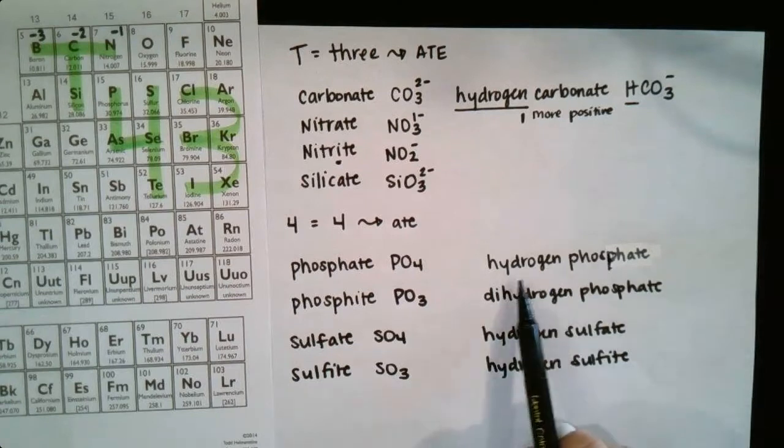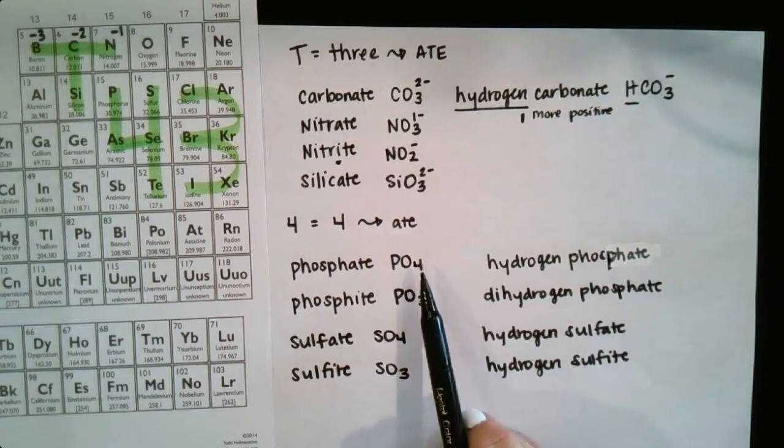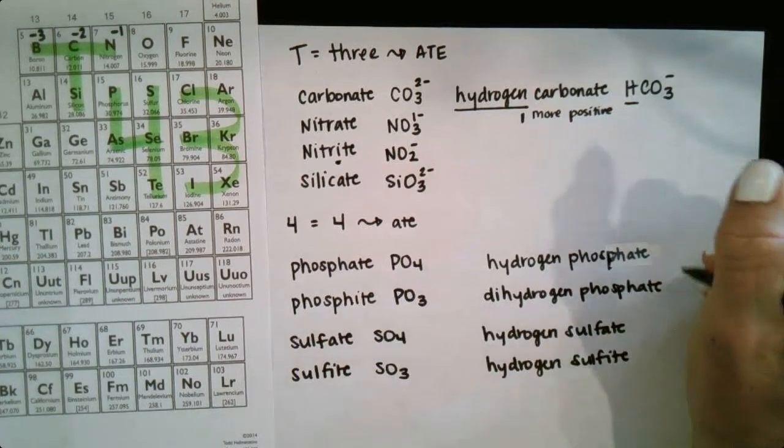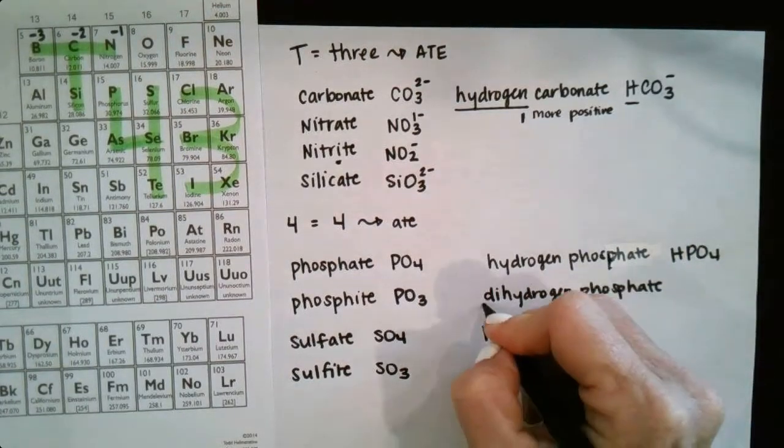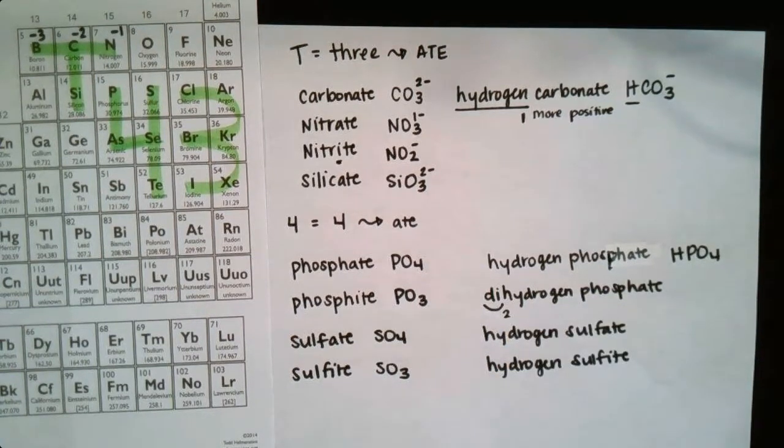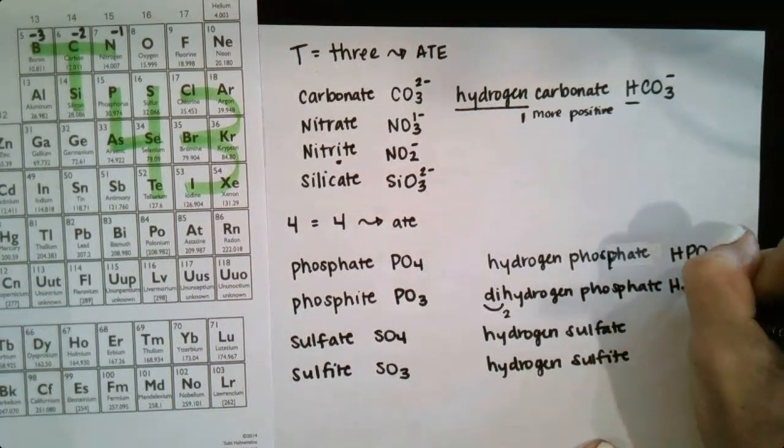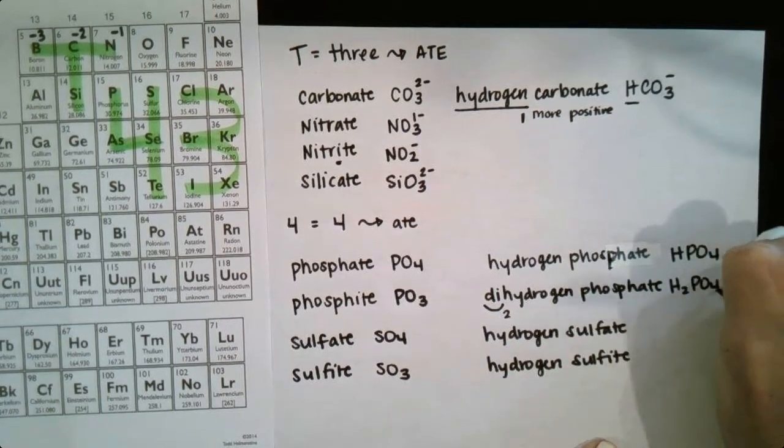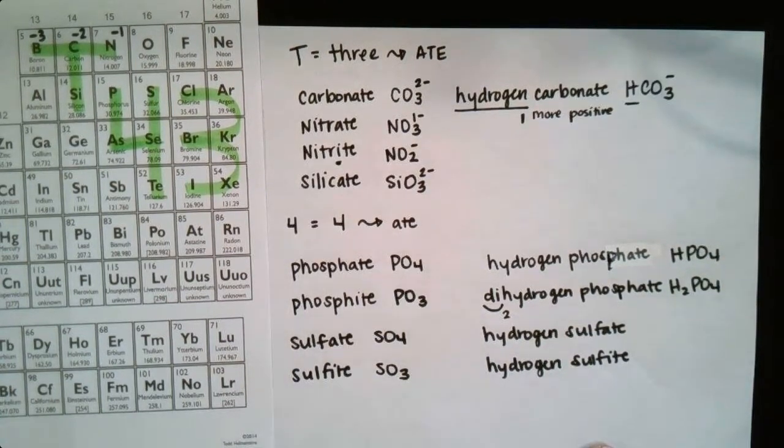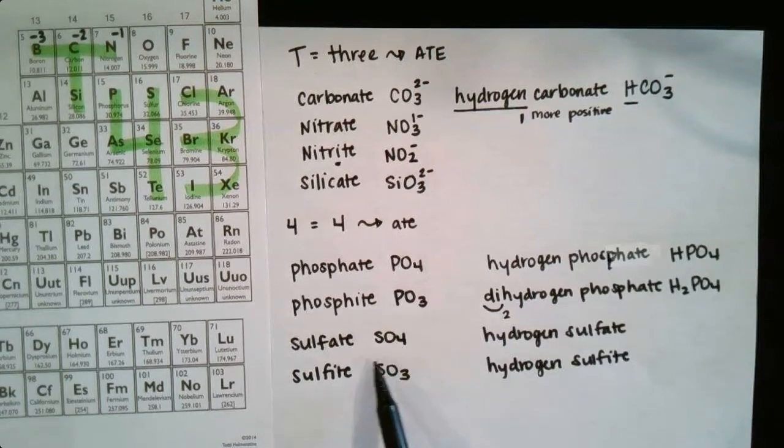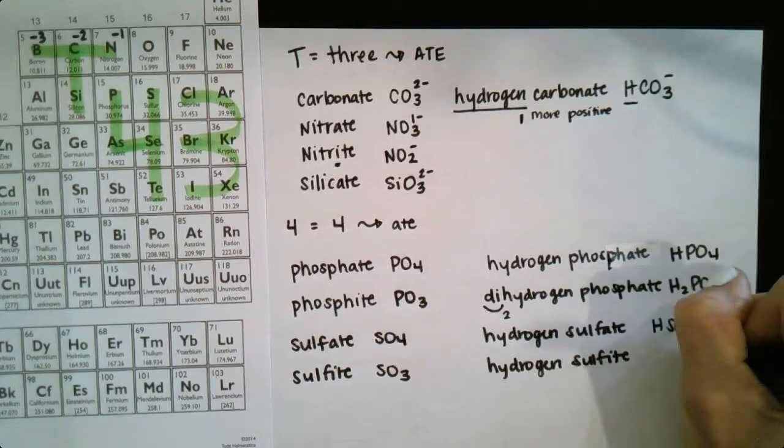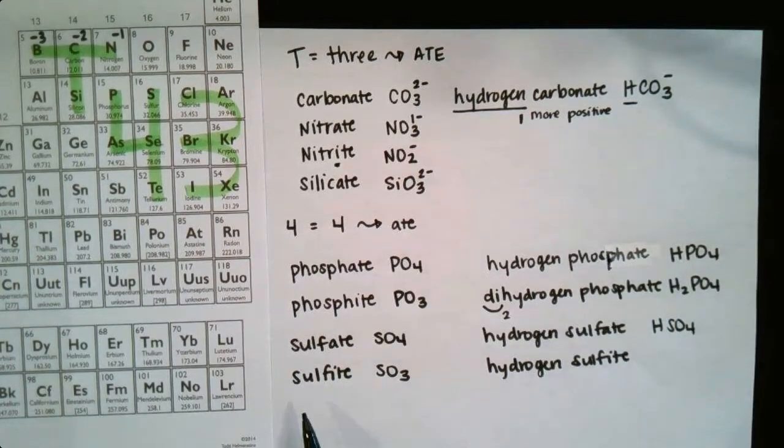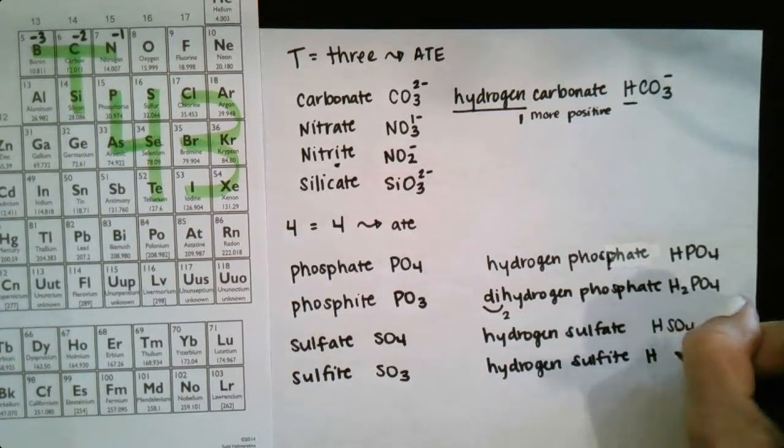And then remember when we do hydrogen phosphate, we keep phosphate, and we just put an H in front, HPO4. And then, so dihydrogen phosphate, di just means two, so we do H2PO4. Okay, they're all just using phosphate as their root. For hydrogen sulfate, we just put an H in front of sulfate, so HSO4. And for hydrogen sulfite, we just put an H in front of the sulfite, so that's HSO3.